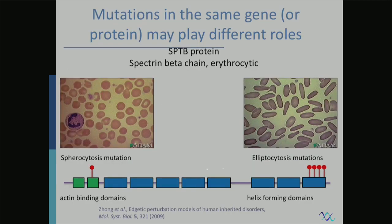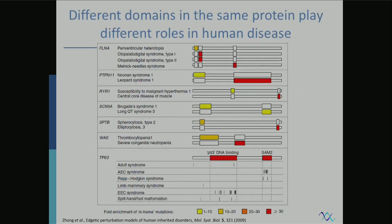Here's an example: a protein that has several domains, and from the outside you see different types of phenotypes — these are human variations in red blood cells. You see different phenotypes depending on which mutations you have. Looking more closely, you notice that actin-binding domain mutations cause a certain shape of red cells, and helix-forming domain mutations cause another. So you can explain the phenotypic differences by saying: if you have mutations in one domain versus another, they cause different phenotypes.